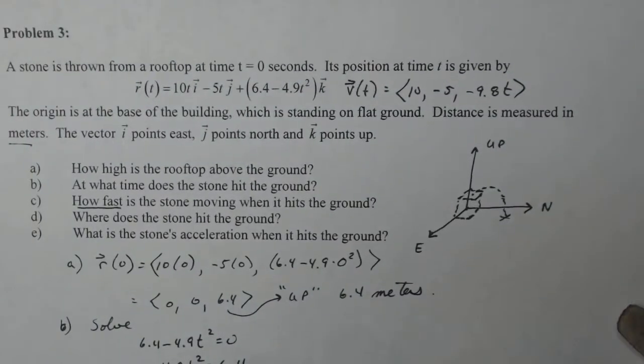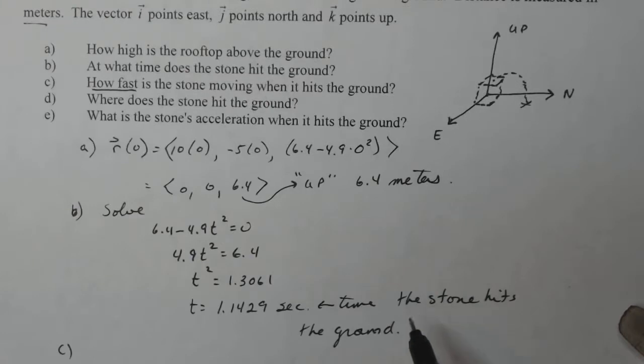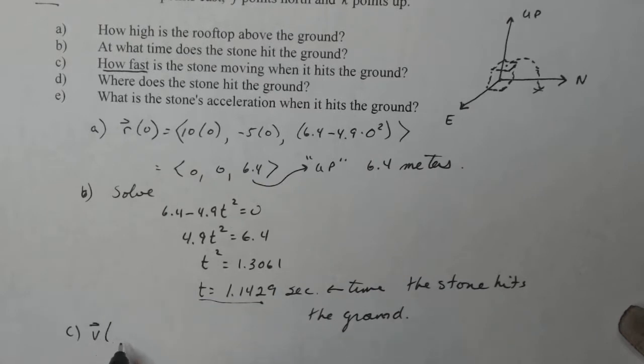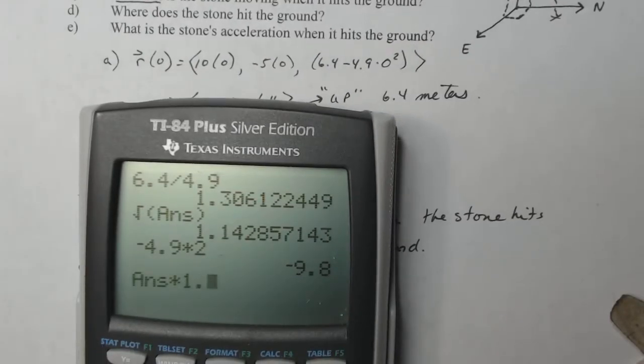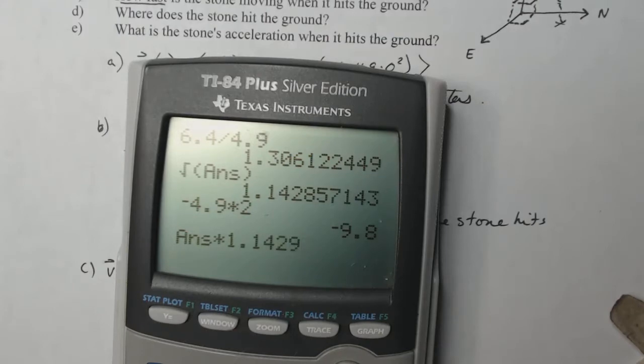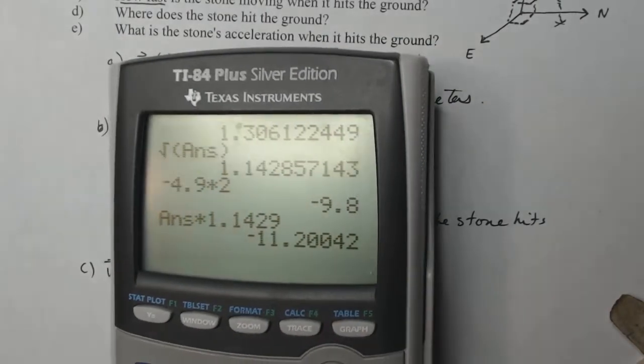So when the problem asks, how fast is the stone moving when it hits the ground? Well, we know what time it hits the ground, right? It hits the ground at this time. So I would need to calculate my velocity at that time in order to determine how fast it's going. So velocity at 1.1429 is going to be 10, minus 5, minus 9.8 times 1.1429. Now this is going to give me a vector here. Is this telling me how fast? Well, we got to think about that. So minus 9.8 times 1.1429 gives me minus 11.2004.